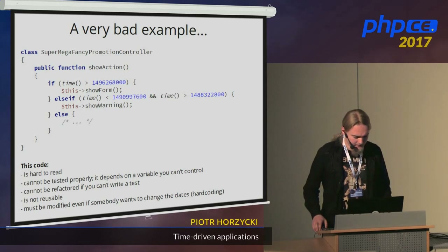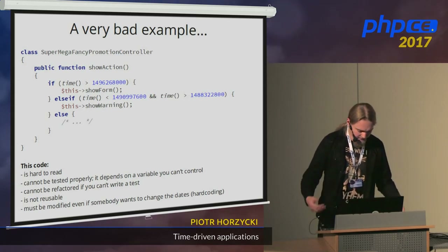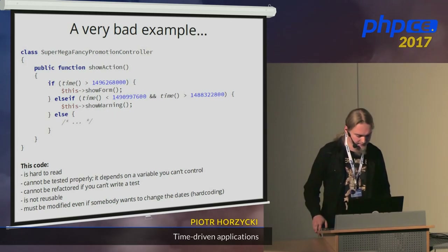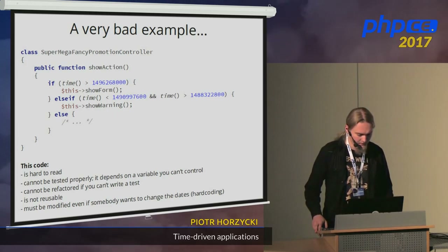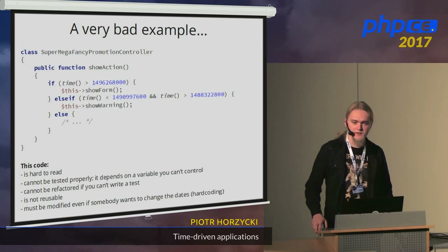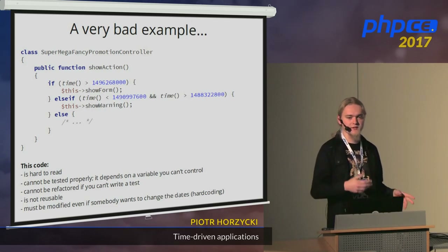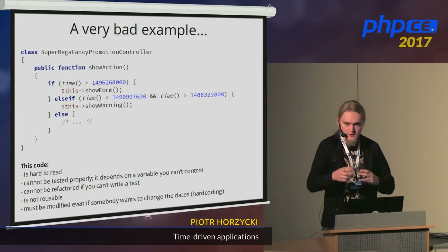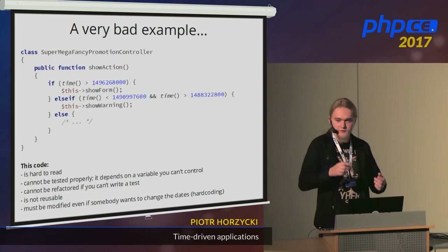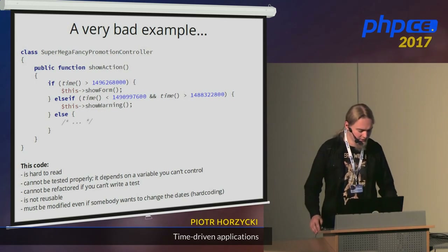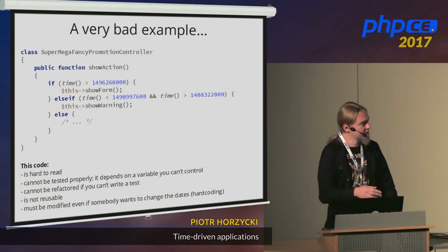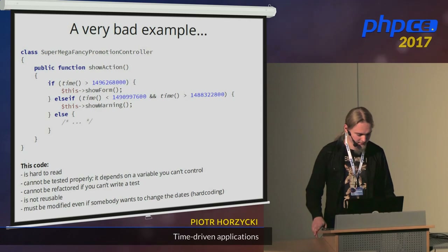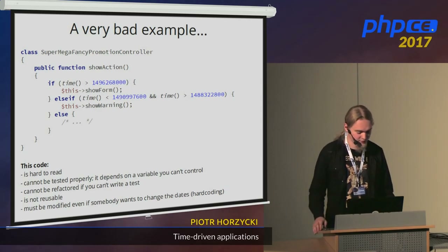Here we have three Unix timestamps, which are easy to parse by the computer but not easy to read by humans. The real problem is that whenever anyone from the business wanted to change those dates, they had to approach me and say, 'Peter, can you change the date, move it two days forward?' And I had to jump into the code, make another commit in Git, and push new code to production.